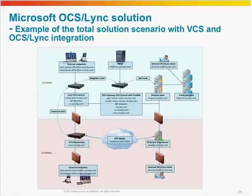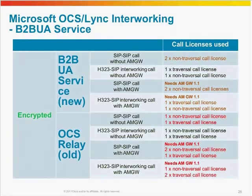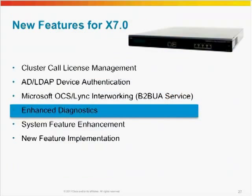As you can see for license consumption with B2B UA, you will actually consume fewer licenses when using this compared to the old OCS relay deployments. Here is an overview of the call license consumption with encryption, and you may need to use the Advanced Media Gateway to get encryption.